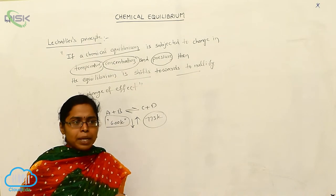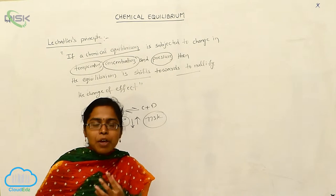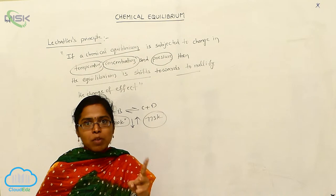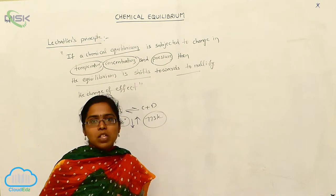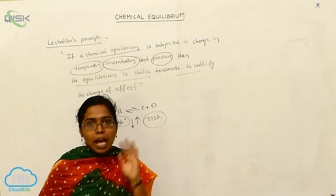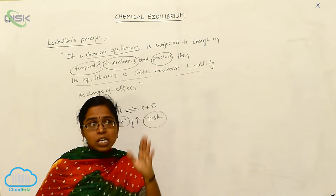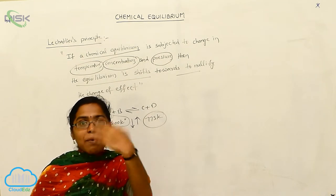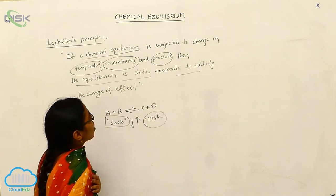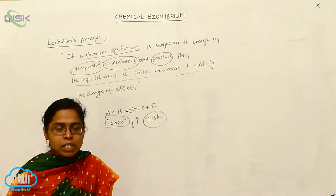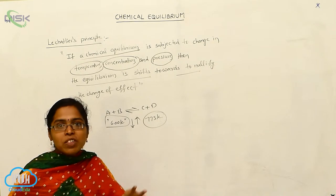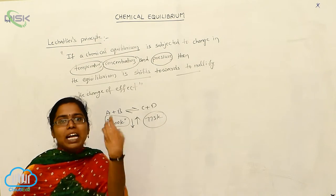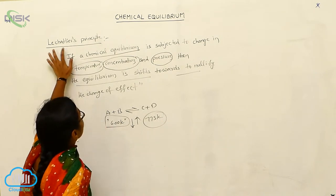Normally, chemical equilibrium is affected by temperature, pressure, and concentration. Whenever we are changing those effects, compulsory the chemical equilibrium also shifts — to nullify that change, to cancel that change, and restore it to what it was before. That is called Le Chatelier's principle.